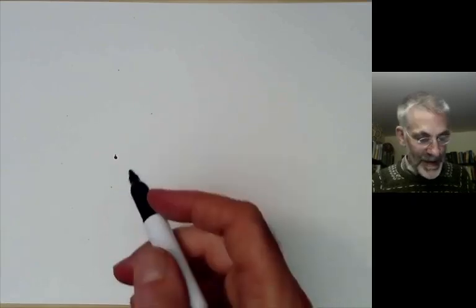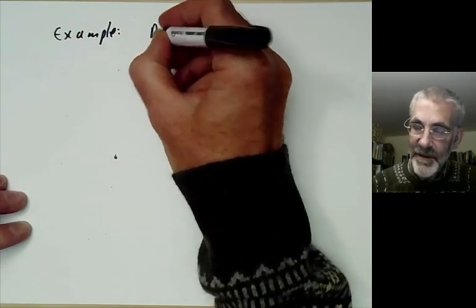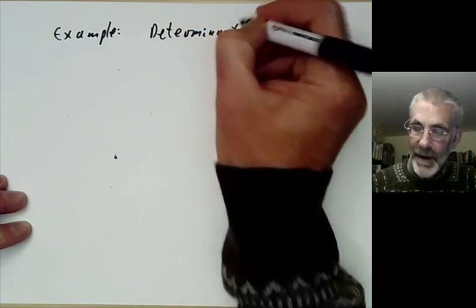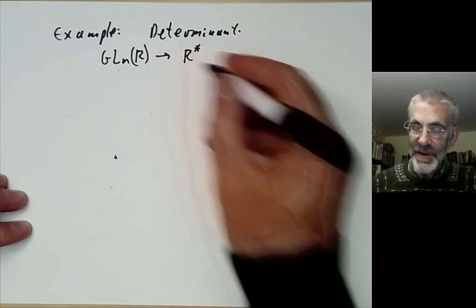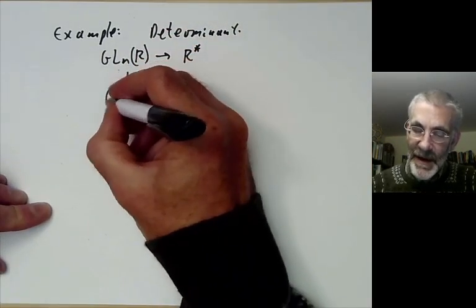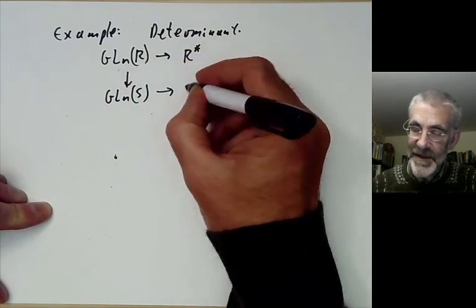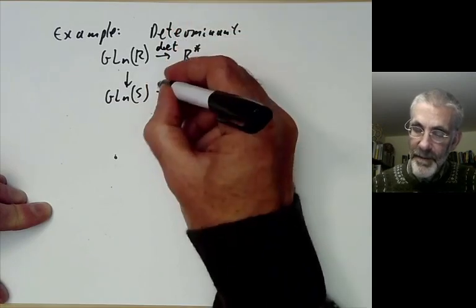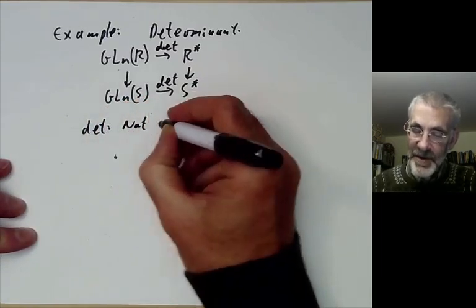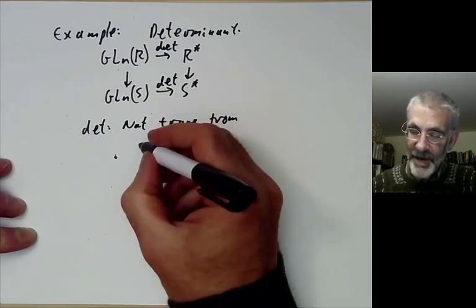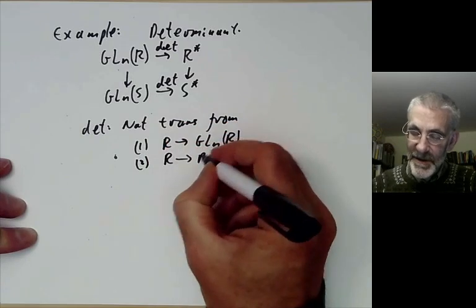A typical example is the determinant. The determinant is a map from the general linear group over a ring to the non-zero elements of a ring R. If you've got another ring S, you get a map from the n×n matrices over R with invertible determinant to the same matrices over S, and this square commutes. This means the determinant is a natural transformation from the functor taking R to GL(R) to the functor taking R to the non-zero elements of R.